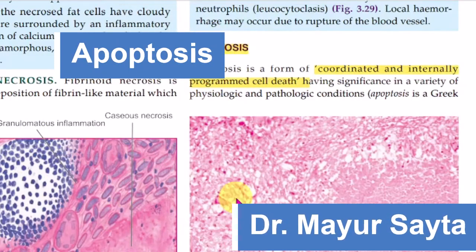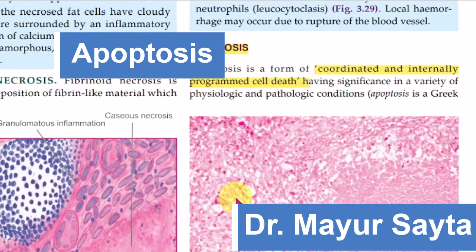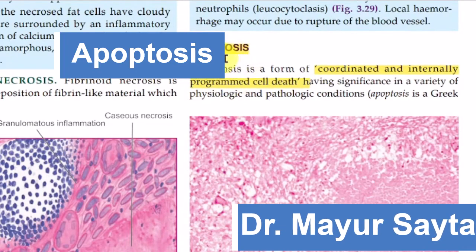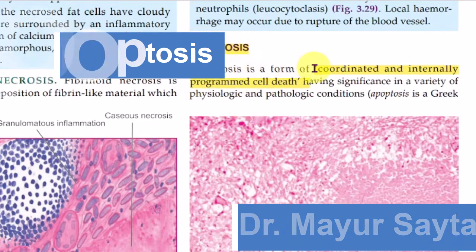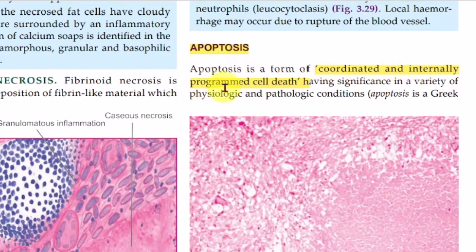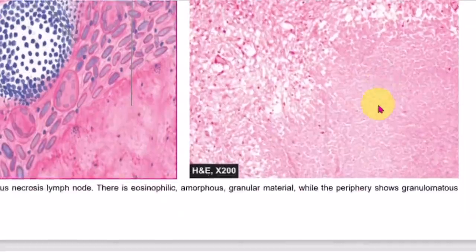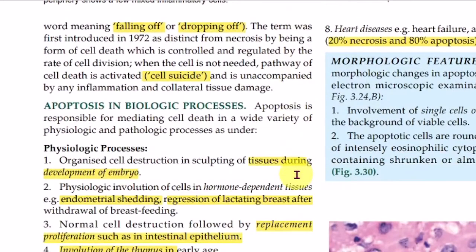Hello friends, myself Dr. Mayur Saitha, and in this video we are going to discuss about apoptosis. It is a coordinated and internally programmed cell death. Cell deaths are two types: necrosis and apoptosis. We have already discussed necrosis; in this video we are going to discuss in detail about apoptosis. This word is derived from the Greek word 'ptosis', which means to fall down.